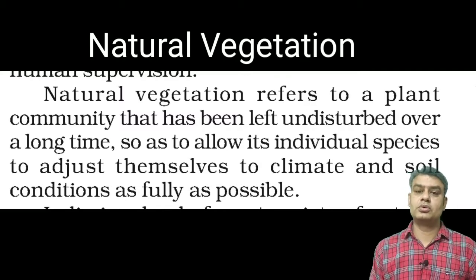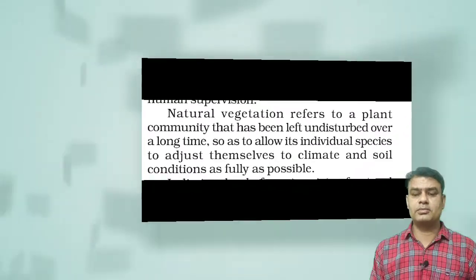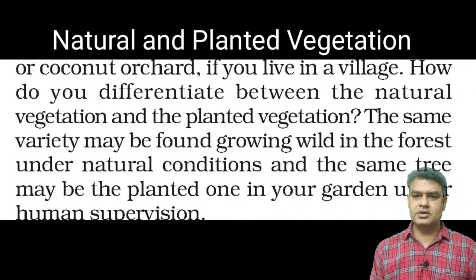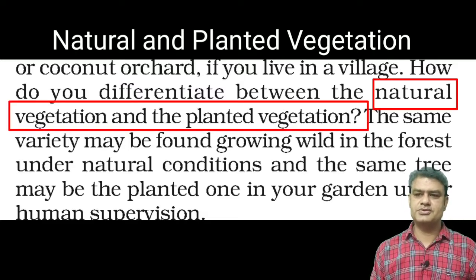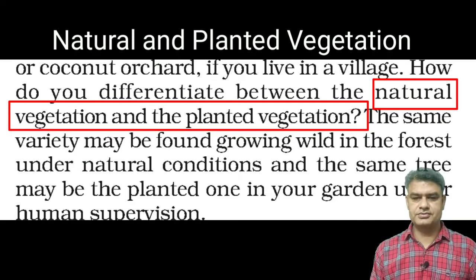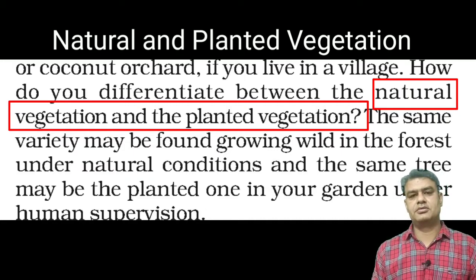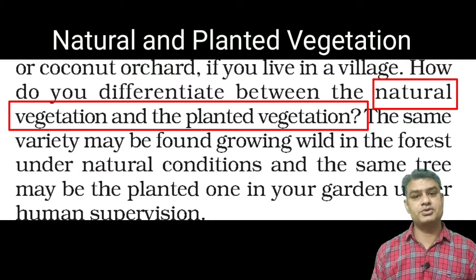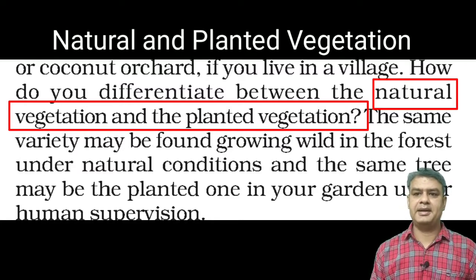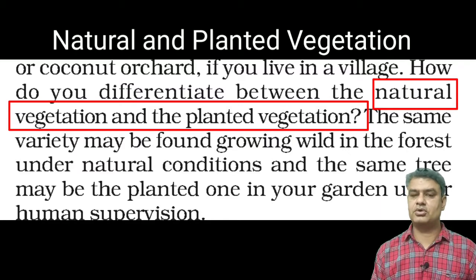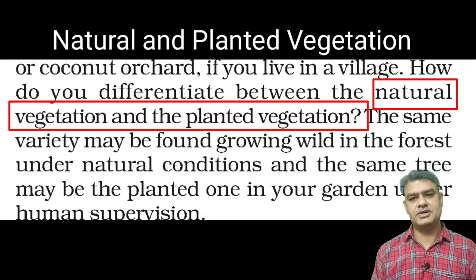We can divide plants into two categories. The first one is natural vegetation and the second one is planted vegetation. Natural vegetation means vegetation growing in forest under natural conditions — human supervision is not involved. Planted vegetation means vegetation that grows in your garden, under human supervision.